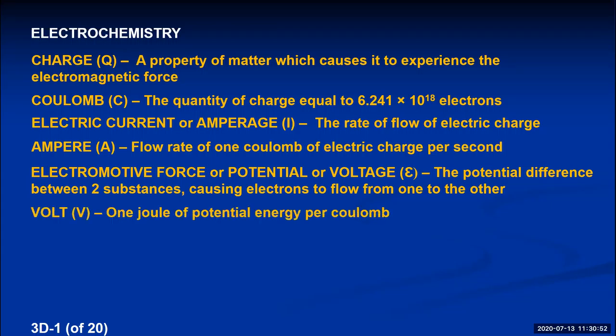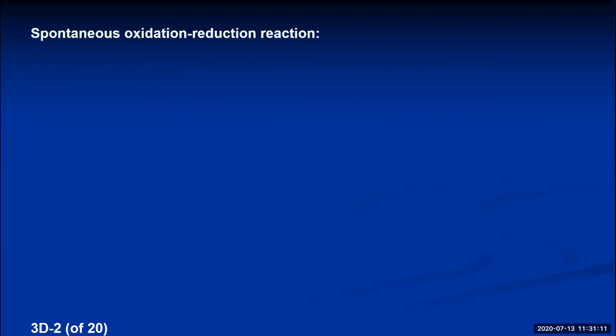The way we measure electromotive force is with a unit of volts — one joule of potential energy per coulomb of charge. With those definitions in place, let's start talking about chemical reactions that involve the gaining and losing of electrons. Those are called oxidation-reduction reactions. Let me give you an example of a spontaneous oxidation-reduction reaction, one that occurs all by itself.